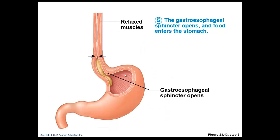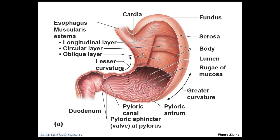As food enters the stomach, the stomach walls are stretched, which is one of the stimulants for digestive processes to begin. The stomach has three layers of smooth muscle, and its job is to mix food and turn it into a liquid called chyme. Different hormones are secreted by the stomach, which we'll discuss when we look at the individual cells lining the stomach mucosa.